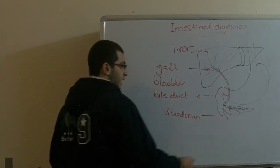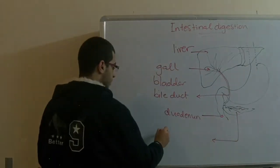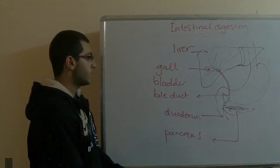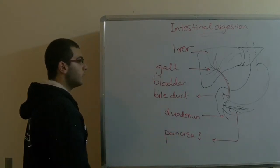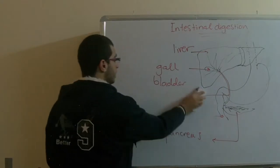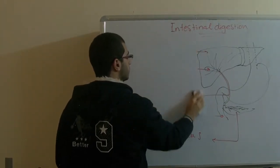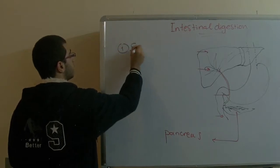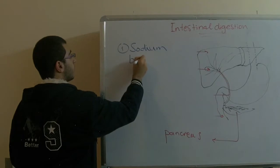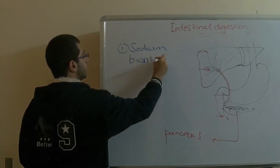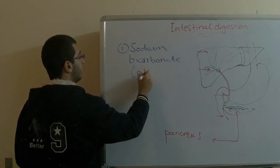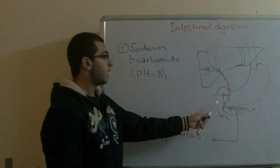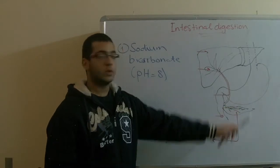The second thing are the pancreatic juices. This is the pancreas and the pancreas also produces some secretions which are poured into the duodenum. The first pancreatic secretion is the sodium bicarbonate. This one has a pH value of 8, so it's more than 7 and accordingly it's alkaline to neutralize the action of the hydrochloric acid which was produced in the stomach.